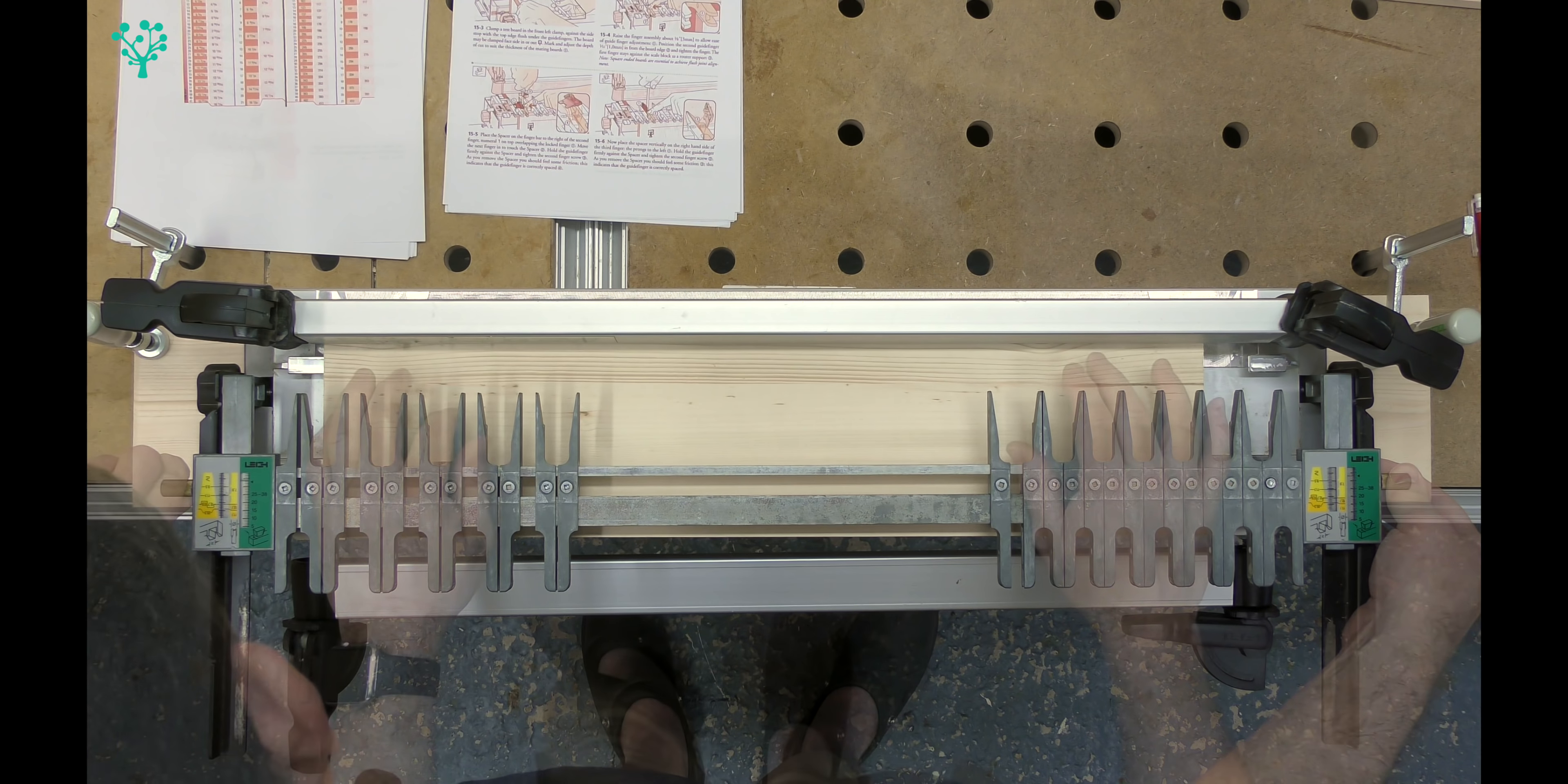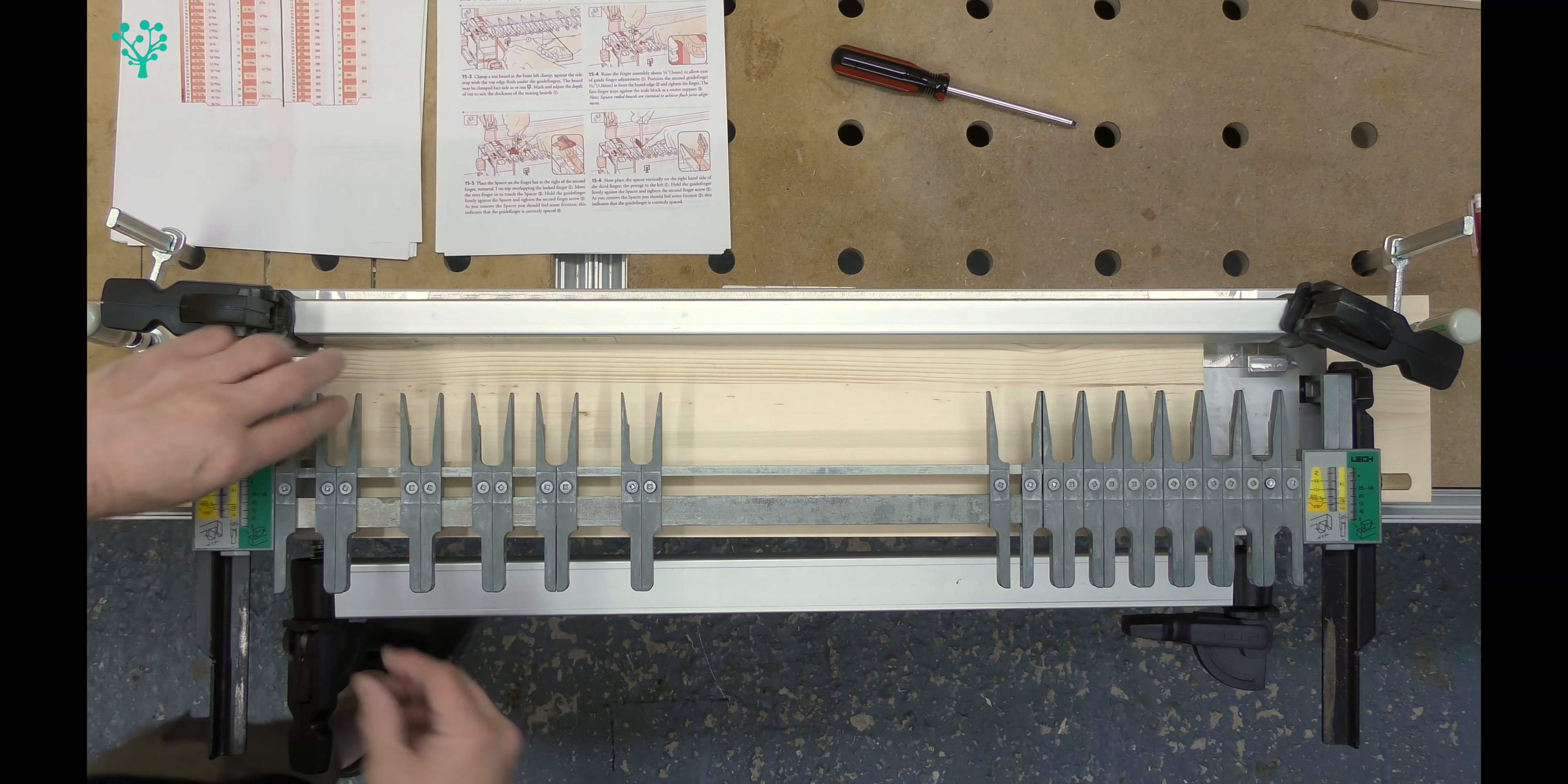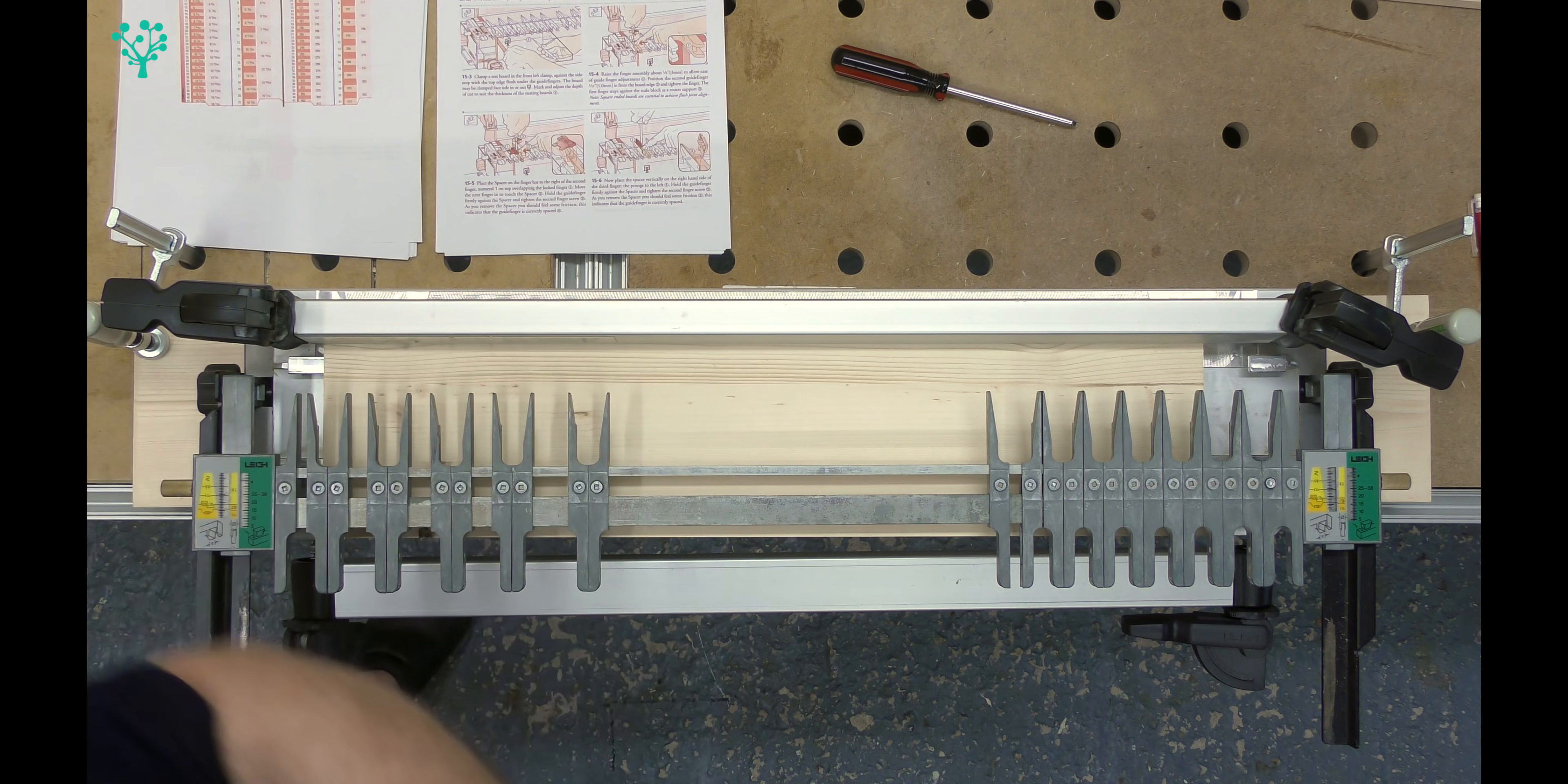The difference with box joints and dovetail joints on the DR4 Pro is that the dovetail joints are infinitely variable. What that means is for dovetails, you can set these fingers pretty much where you want to, to suit the width of your material and also the design that you want to go for. It's not the same with box joints.